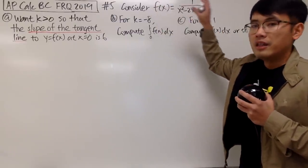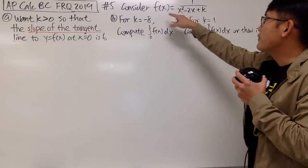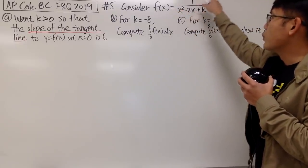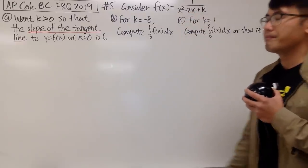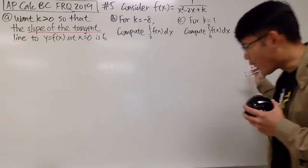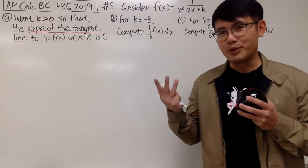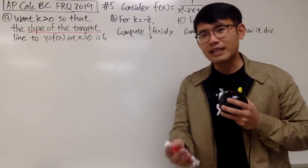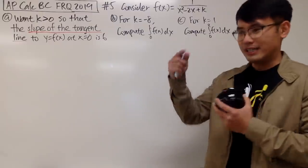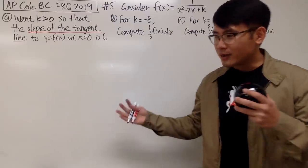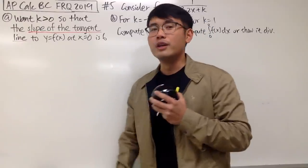We are going to first consider this family of functions, where f(x) is equal to 1 over x squared minus 2x plus k. We have three parts — technically three questions in one, just like a physics thesis where one question has multiple parts. Here is the first question.